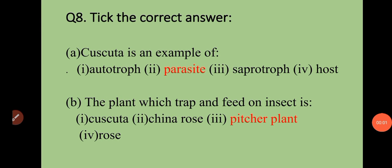Question number eight: choose the correct answer. First: Cuscuta is an example of — autotrophs, parasites, saprotrophs, or host? Answer: Cuscuta is an example of a parasite. Second: the plant which traps and feeds on insects is — Cuscuta, China rose, Pitcher plant, or rose? Answer: Pitcher plant.